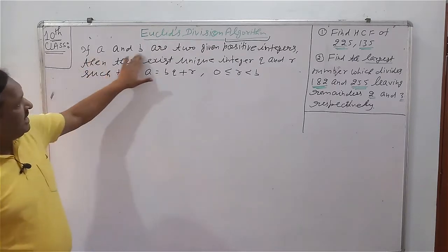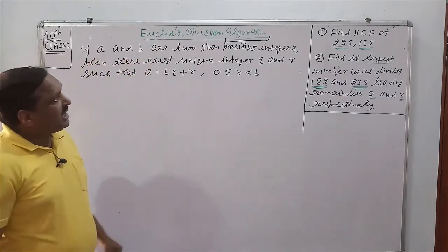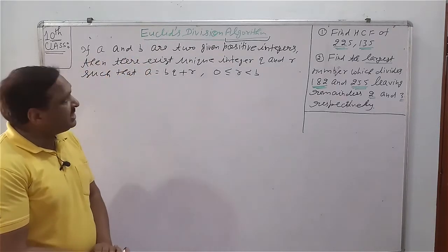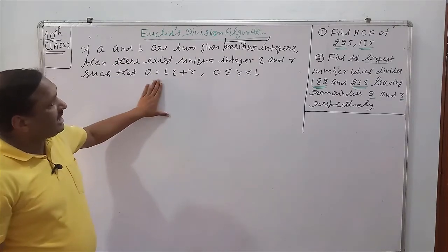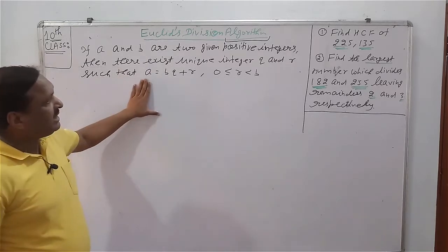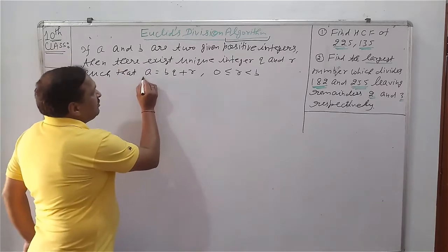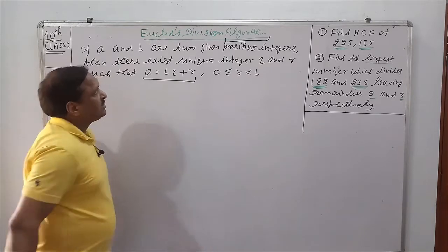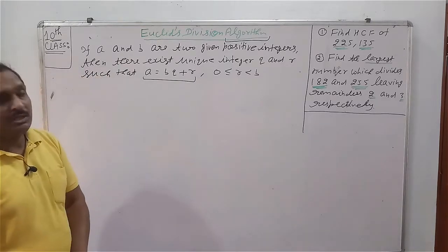If A and B are two given positive integers, then there exists unique integer Q and R such that A is equal to BQ plus R. It is called Euclid's Division Algorithm.